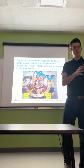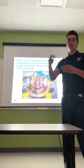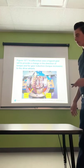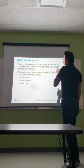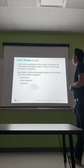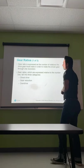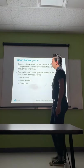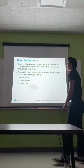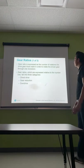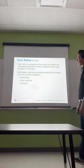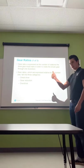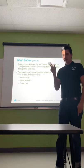Gear ratio is expressed as the number of rotations the drive gear must take in order to rotate the driven gear through one revolution. Gear ratios, expressed relative to the number one, fall into three categories: direct drive, gear reduction, and overdrive.